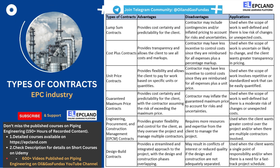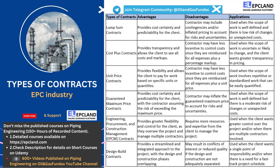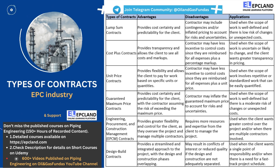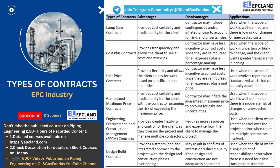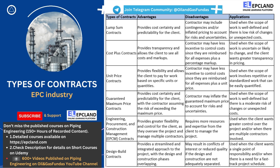However, there are also some potential disadvantages to design-build contracts. Because the design and construction phases overlap, it can result in conflicts of interest or reduced quality if the design and construction are not adequately separated. Additionally, the contractor may have less incentive to control costs since they are responsible for both design and construction and may be motivated to maximize their profits. Overall, design-build contracts are best suited for projects with a need for a fast-track project schedule or when the client wants a single point of responsibility. They can provide a streamlined and integrated approach, potentially resulting in faster completion times and lower costs. However, it is important to ensure that the design and construction are adequately separated and that the contractor has appropriate incentives to control costs and maintain quality. As with any type of contract, it is important to carefully consider the specific terms and conditions of a design-build contract before entering into it.